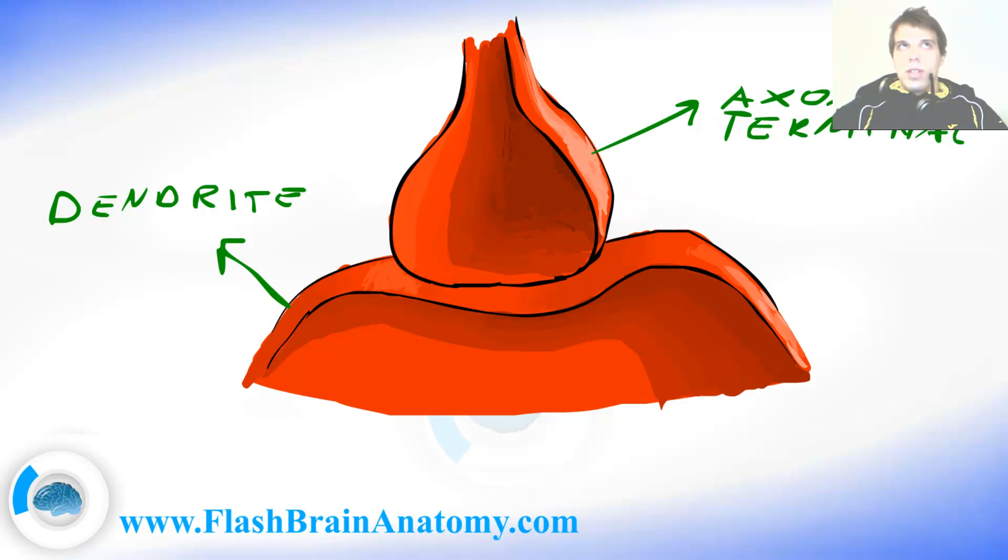Now this is done with the help of vesicles that can be found in the axon terminal. And those vesicles contain the substances called the neurotransmitters and they can fuse with the membrane, as you can see here and here.